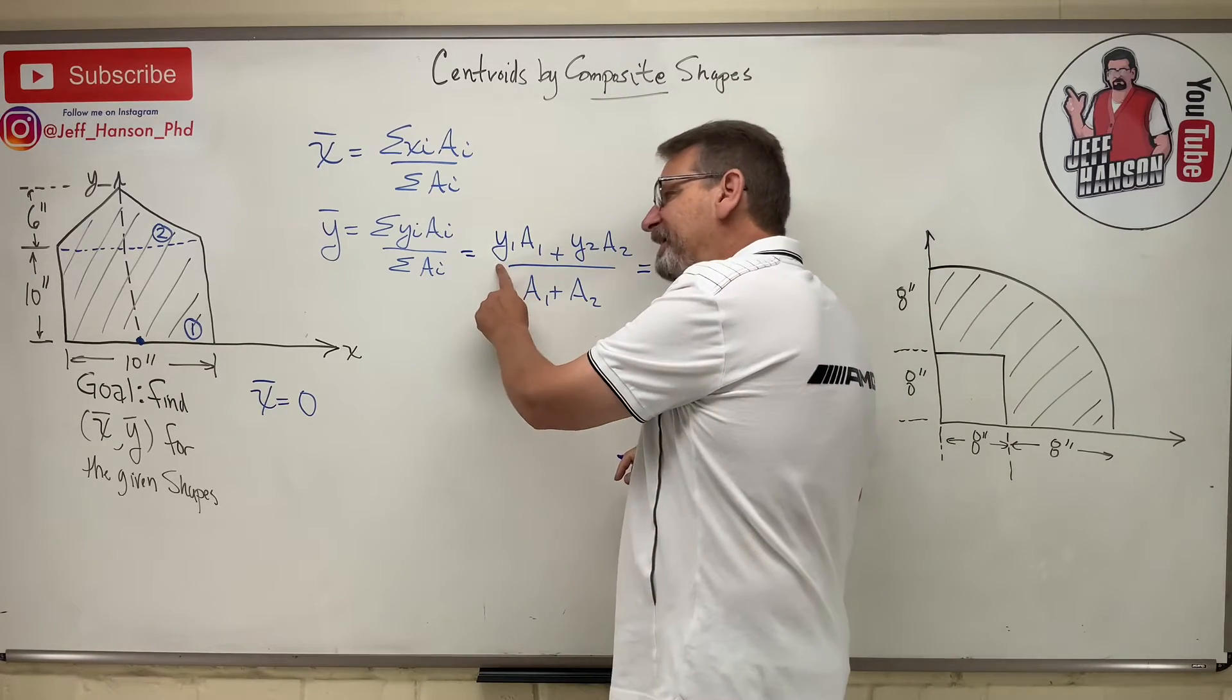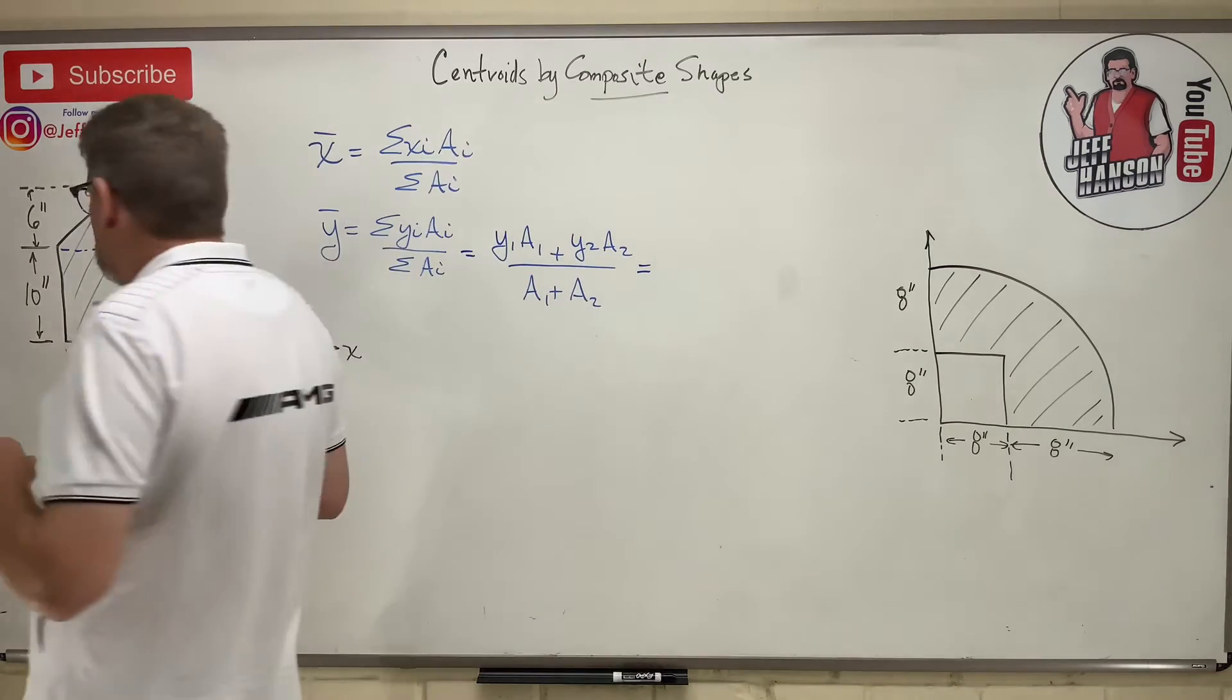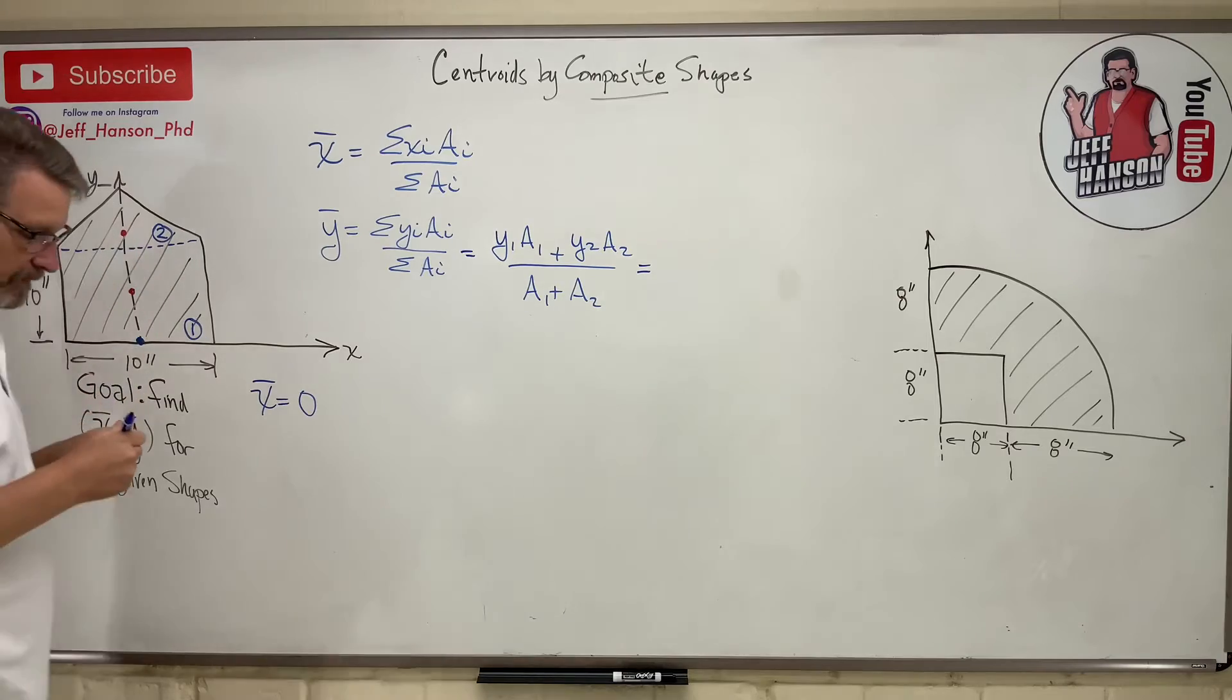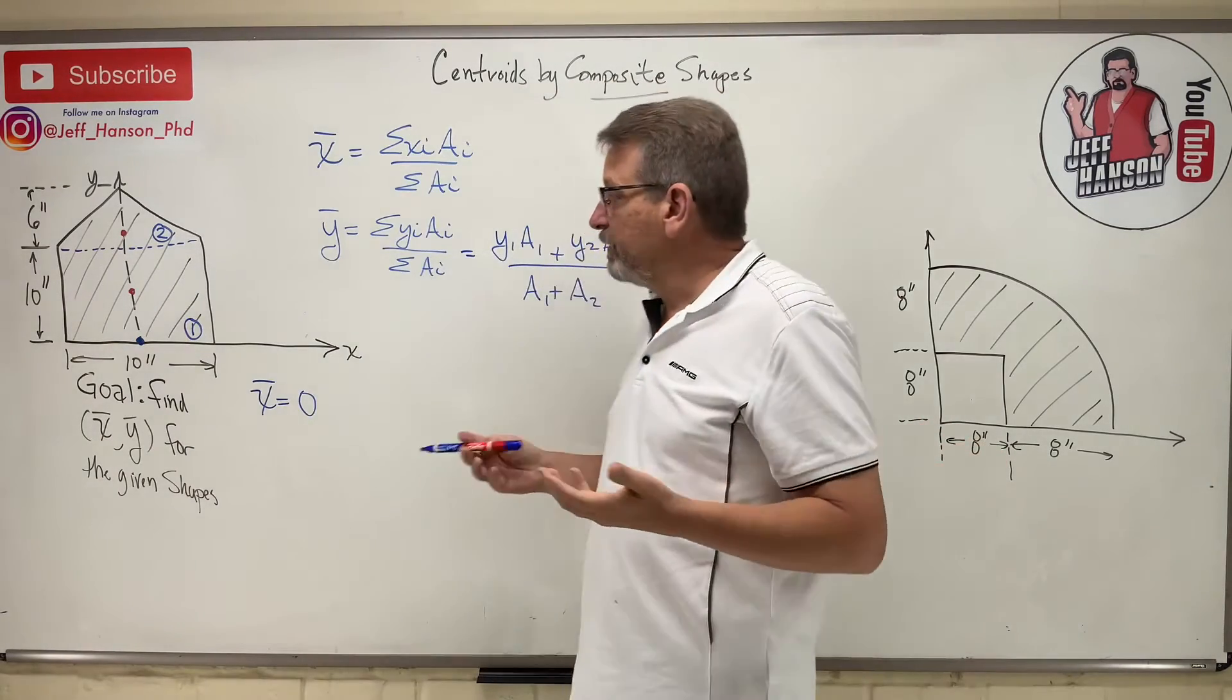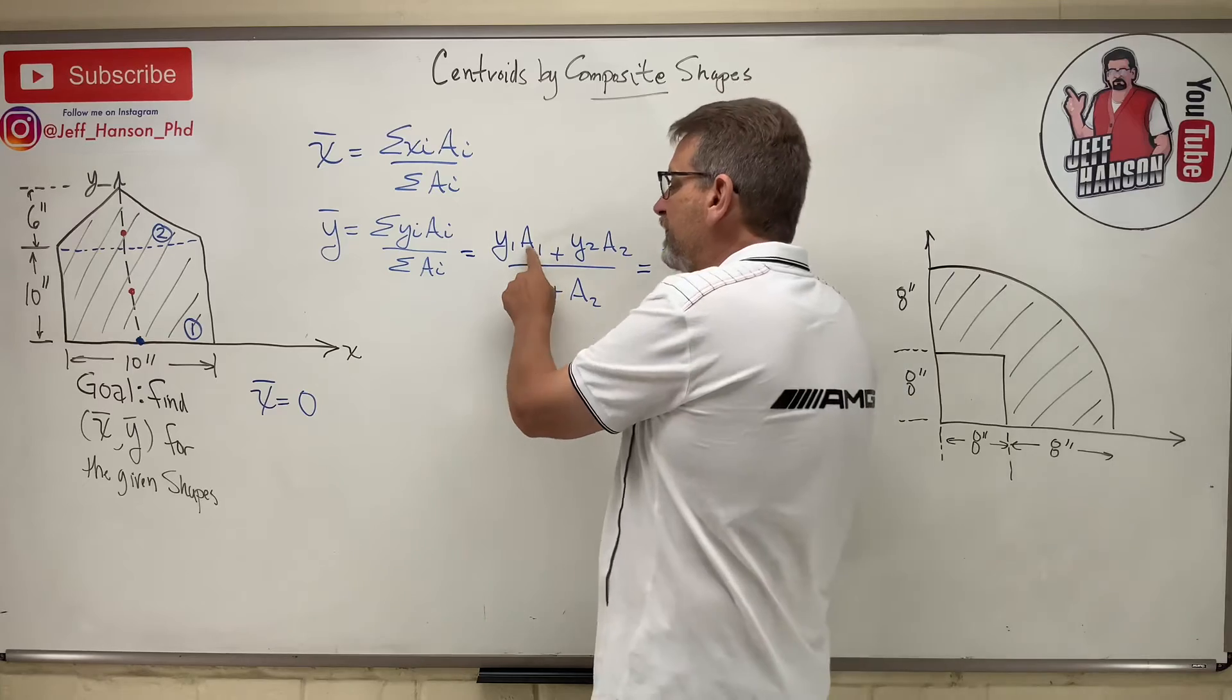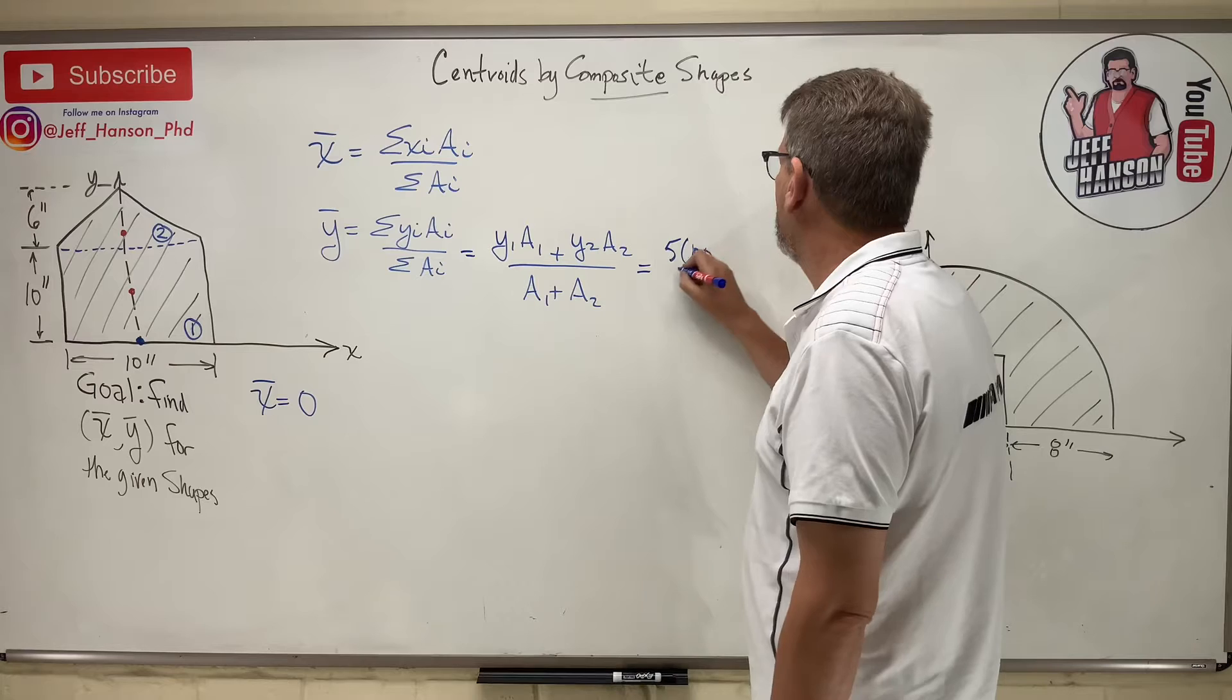So let's see if we can put the right things in this equation and find what Y-bar is equal to. So we'll start off with this. Y-bar for piece number one, where is the middle? If something that helps you is like, put a dot. I'm going to put a red dot where I think the middle is. I think it's right there, and I think for this one it's like right there. So all I'm asking you is where's the dot in the Y direction. So for a rectangle, it's half, isn't it? So it's five times the area of piece number one. Well, it's just 10 by 10. That's 100.